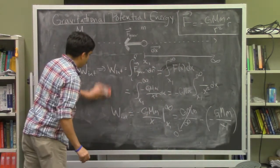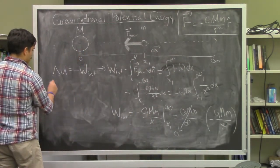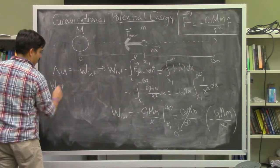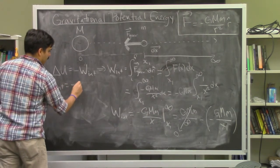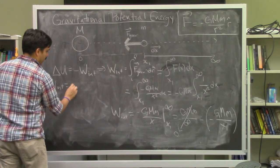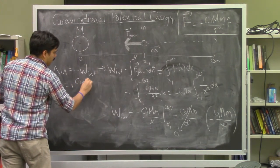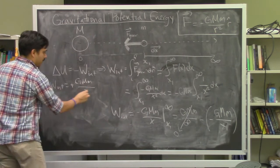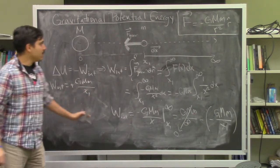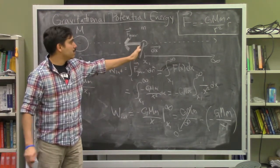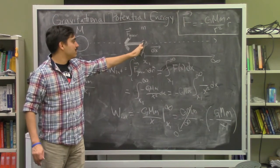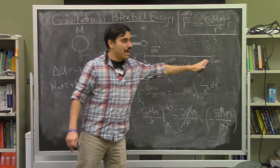So the internal work done is W = GMm/x₁. This is the work done by the gravitational force to take the object from x₁ out to infinity.